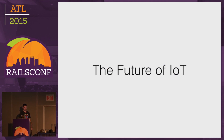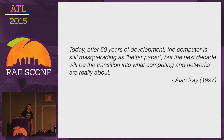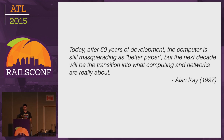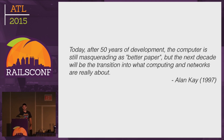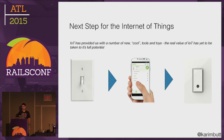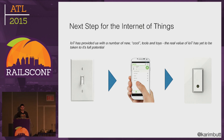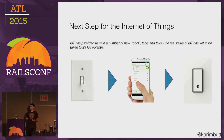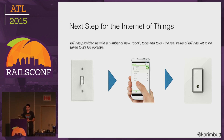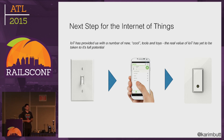The future of the Internet of Things. In 1997, Alan Kay — the pioneer behind object-oriented programming and the graphical user interface — said: 'Today after 50 years of development, the computer is still masquerading as better paper, but the next decade will be the transition into what computing and networks are really about.' I firmly believe that's what we're seeing in the IoT space as well. To play off Alan Kay's words, right now the Internet of Things is masquerading as a better light bulb or a better thermostat.